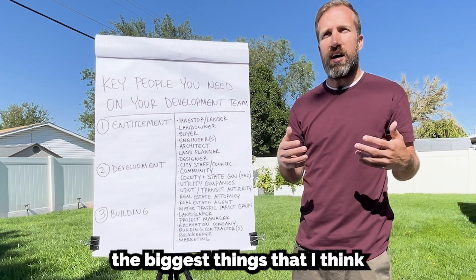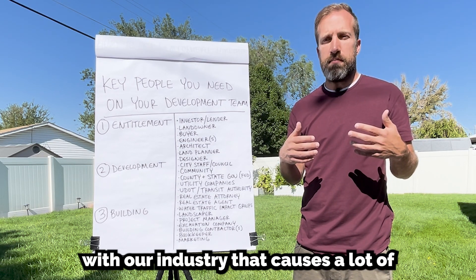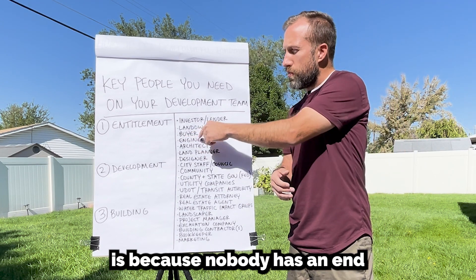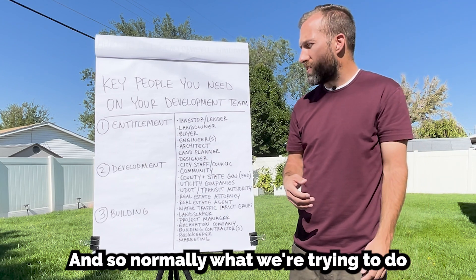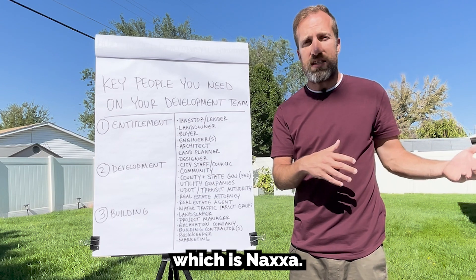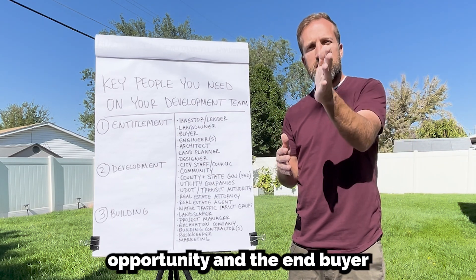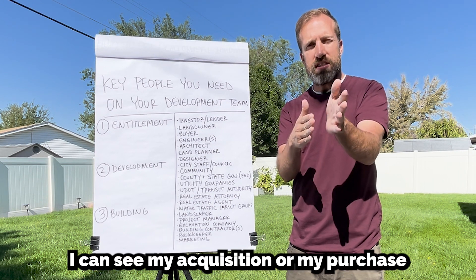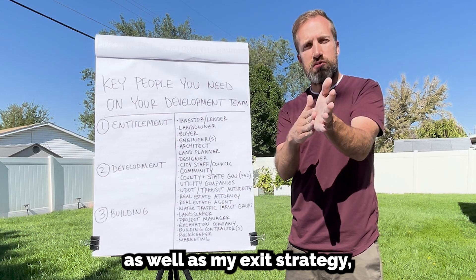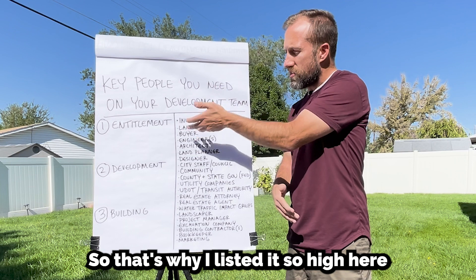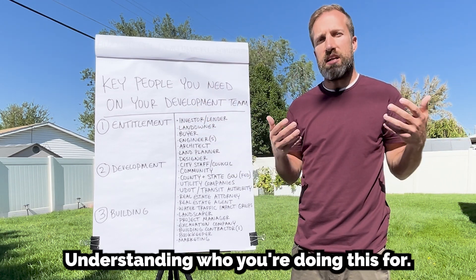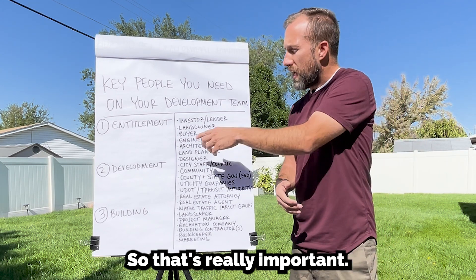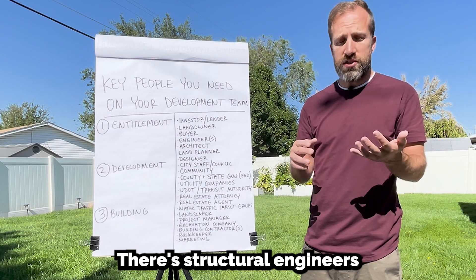One of the biggest downfalls in our industry — causing a lot of risk and legal contractual binding — is that nobody has an end user in mind. We have a tool we use called NACSA that helps bring the opportunity and the end buyer together at the same time, so from the get-go I can see my acquisition as well as my exit strategy — the disposition. Buyers are really important; you need to understand who you're doing this project for.